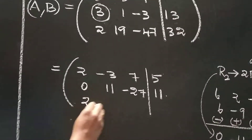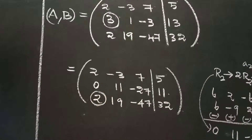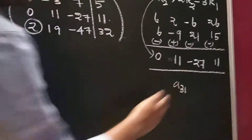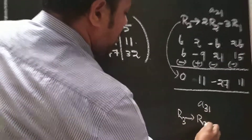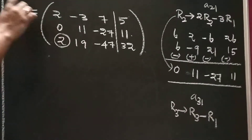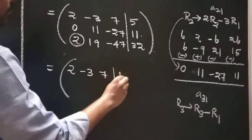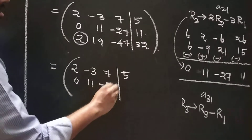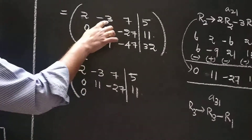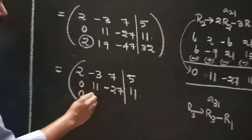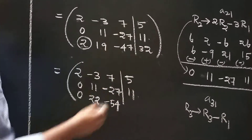Next, make element A(3,1) equal to 0. Since R3 and R1 both have 2, directly apply R3 implies R3 minus R1. So: 2-2=0, 19-(-3)=22, -47-7=-54, 32-5=27. Third row becomes [0, 22, -54, 27].